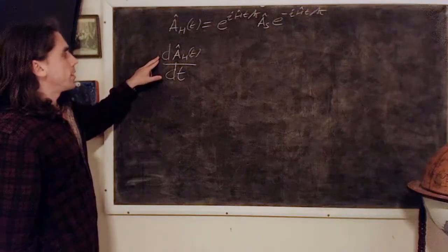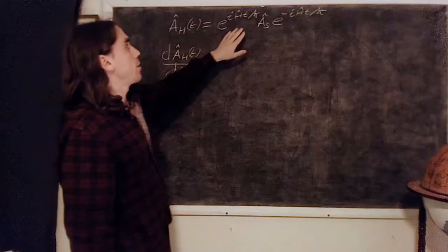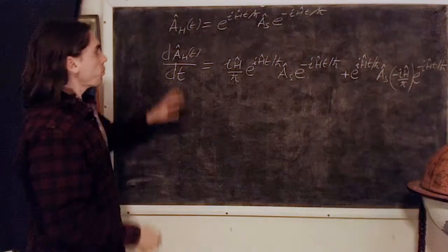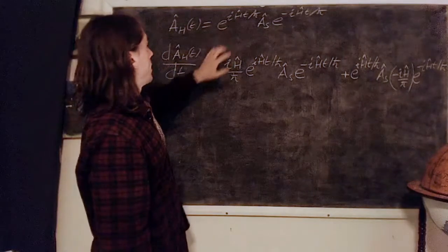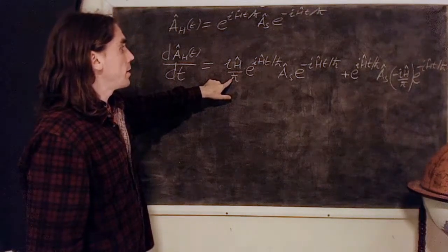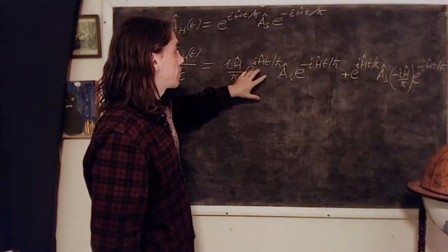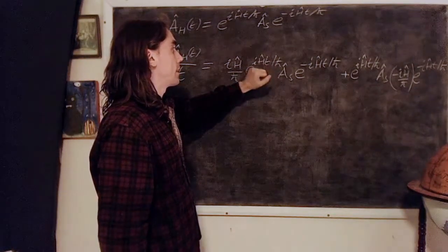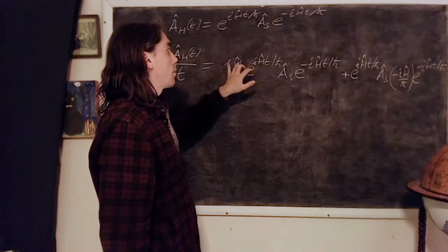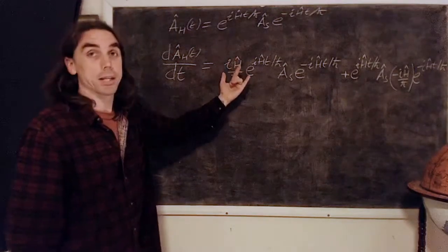We can look at the derivative of this operator with respect to time. We know that the only time appearing in this expression is here and here, so we find the following: We act first on this part, we bring down an iH/ℏ. This commutes with this because the exponential of this Hamiltonian operator with its pre-factors is only a function of the Hamiltonian. The Hamiltonian always commutes with itself and so it commutes with any power of itself and with the exponential of itself.